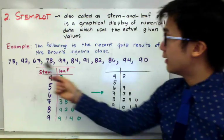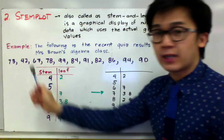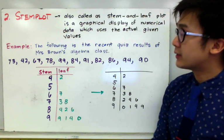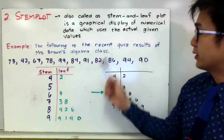By just looking at the list, it doesn't make sense if we're just going to look at it with this ungrouped data set. We're going to create a graphical display using a stem plot in representing Mrs. Brown's algebra quiz result.